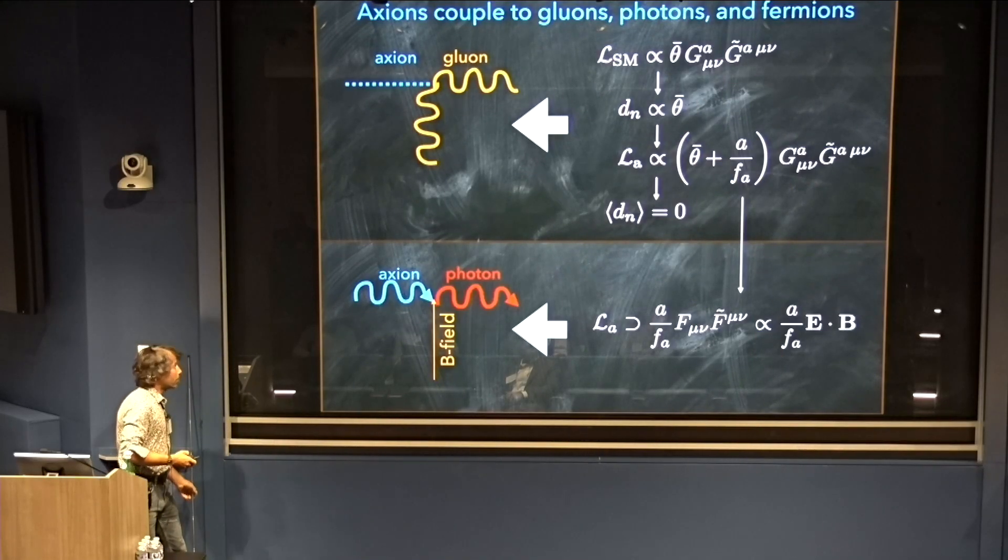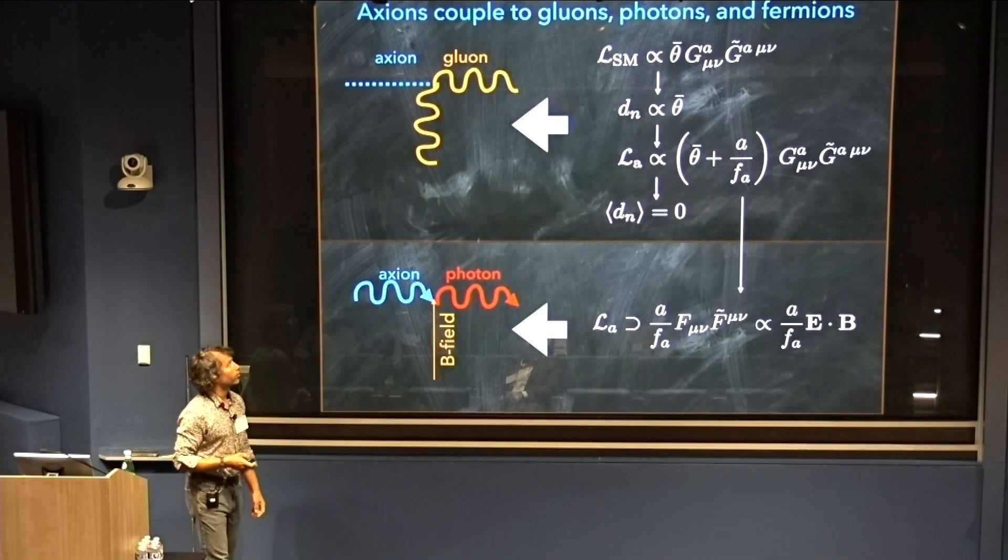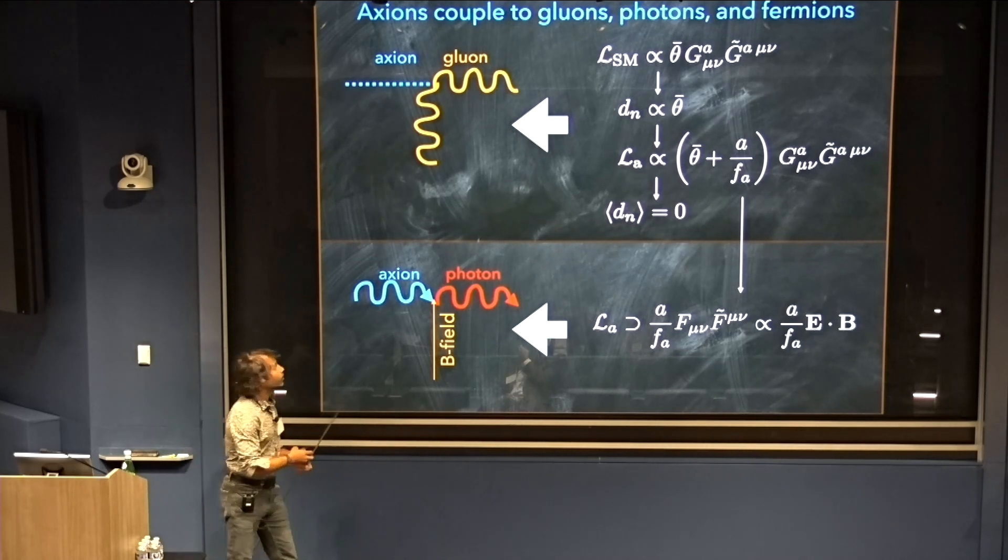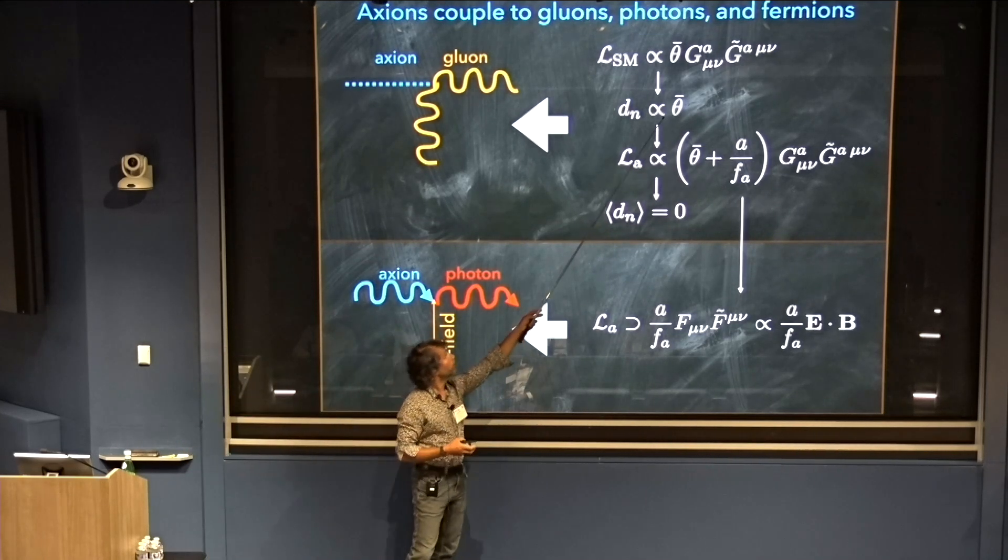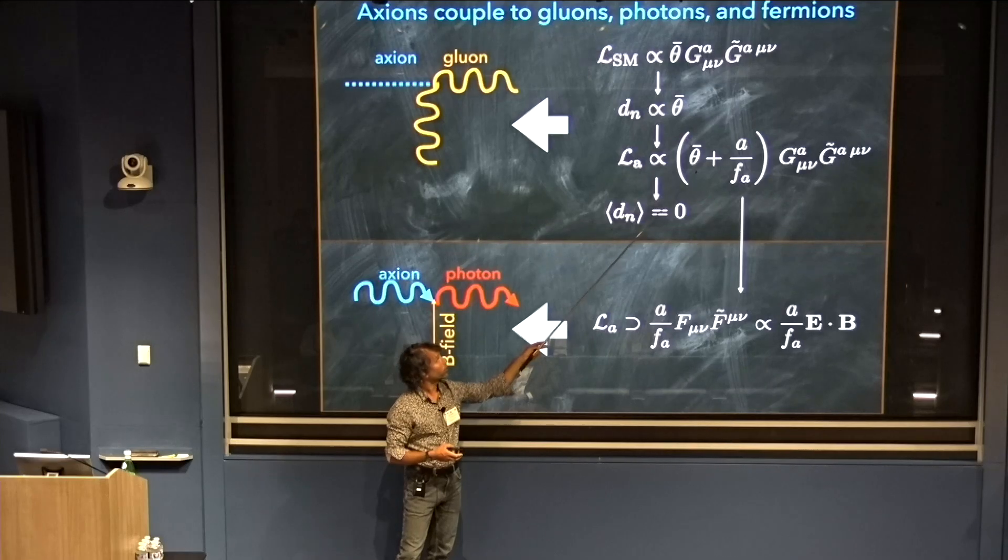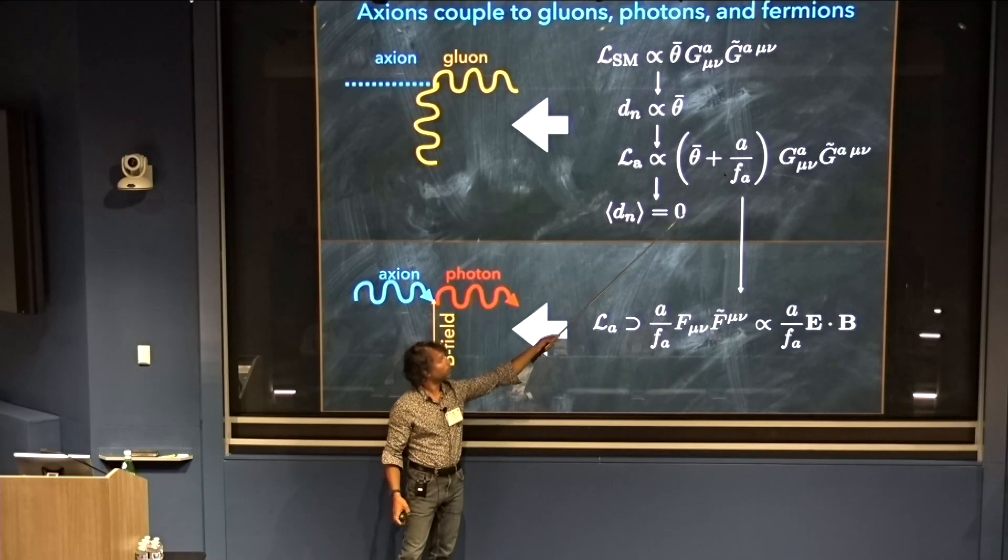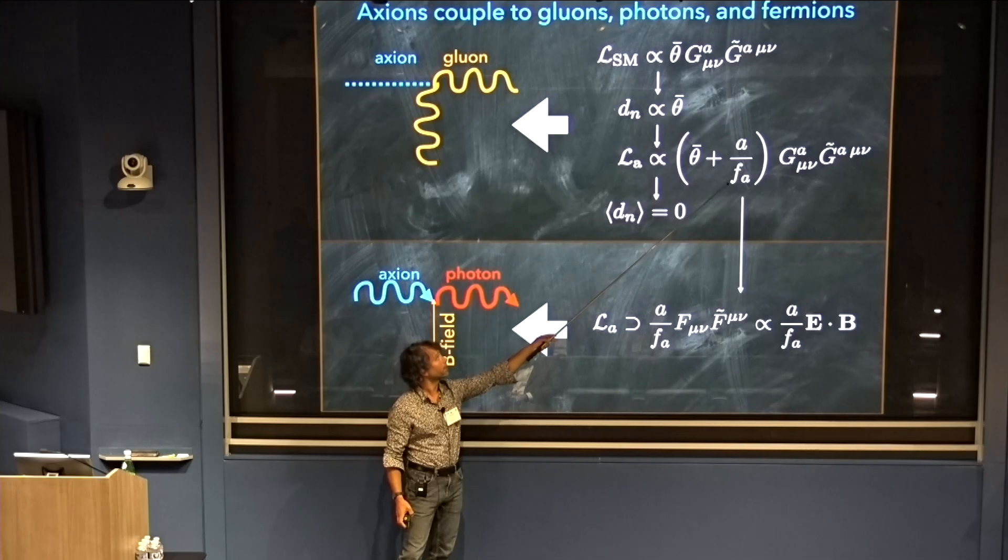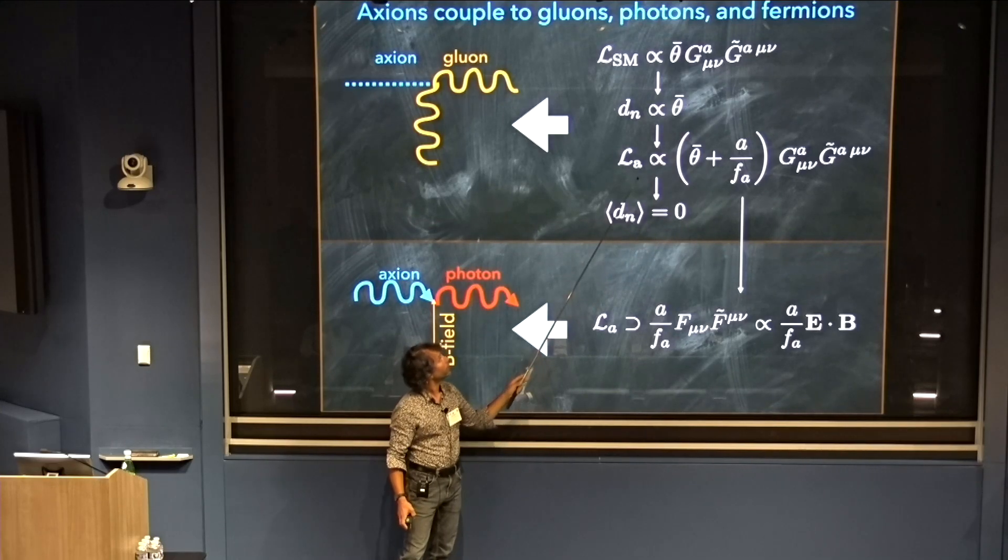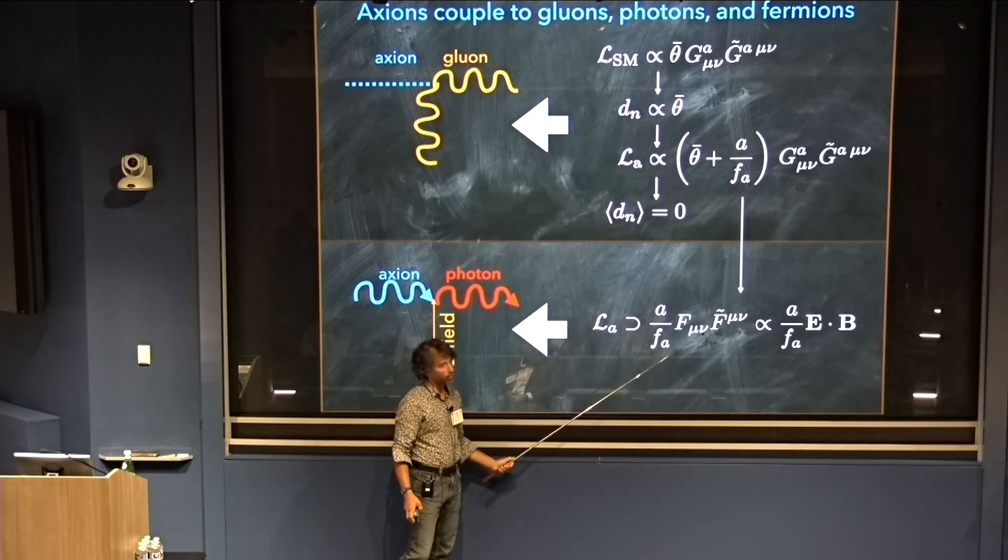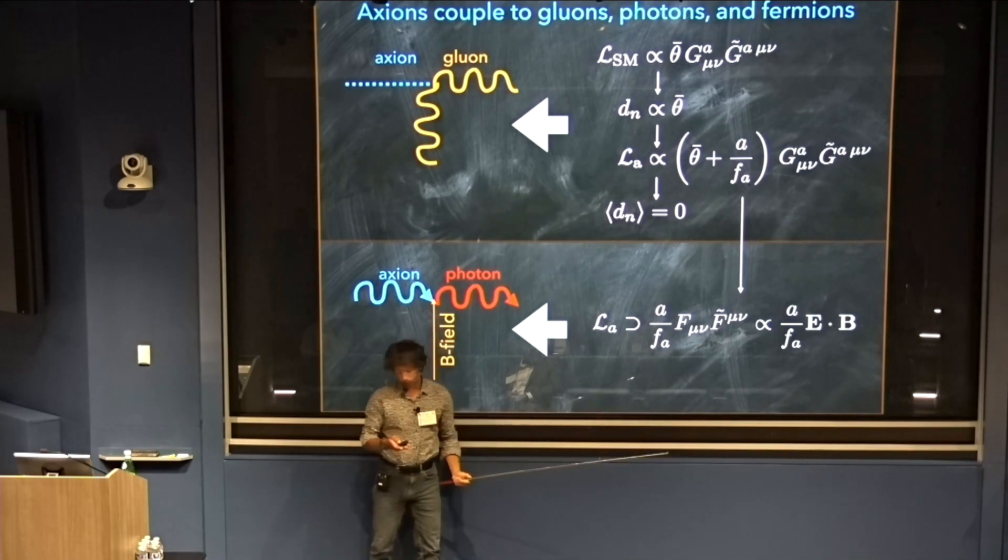At a more precise level, the interaction of this theta parameter, which parametrizes the neutron electric dipole moment, is given by the following term, which could have appeared in the QCD Lagrangian, where G here is the QCD field strength. This would generate a neutron electric dipole moment proportional to this theta parameter. The axion solution is we promote theta to a dynamical field, the axion. There's a scale F_A, which I already hinted at before. This is the scale at which the axion is born. I'll tell you again what that means in a few slides. And now, in the presence of this axion field, the expected neutron electric dipole moment is zero. Due to these quantum effects, the axion also acquires in the infrared an interaction with electromagnetism which looks like E dot B.